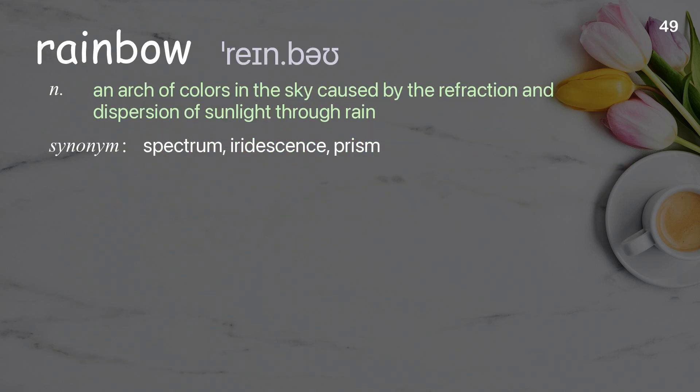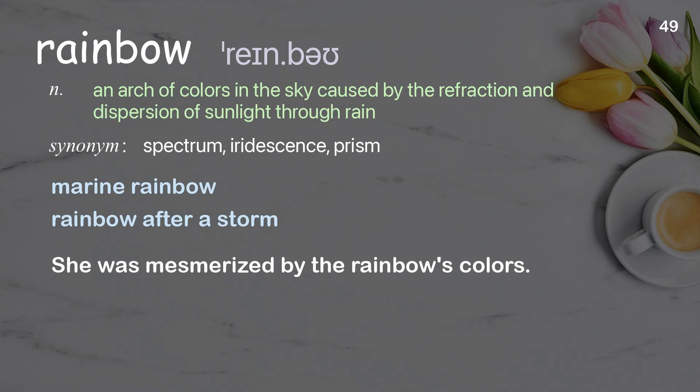Rainbow: an arch of colors in the sky caused by the refraction and dispersion of sunlight through rain. Examples: marine rainbow, rainbow after a storm. She was mesmerized by the rainbow's colors.